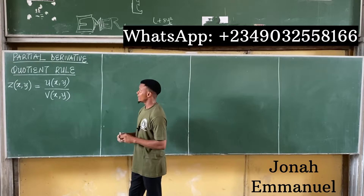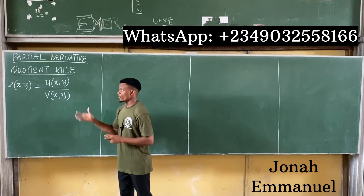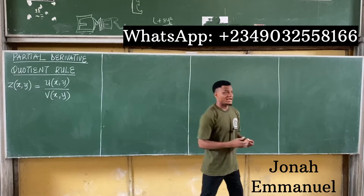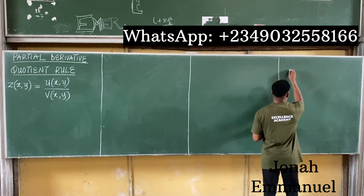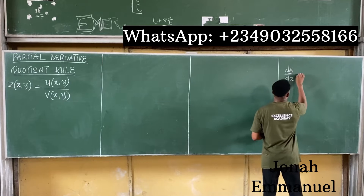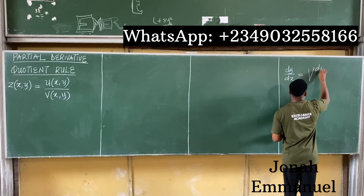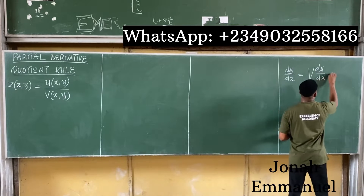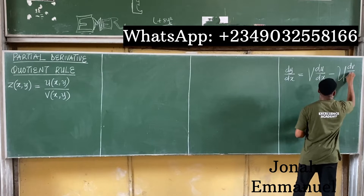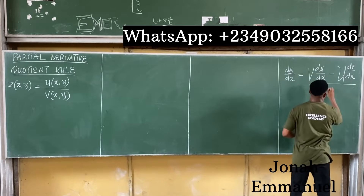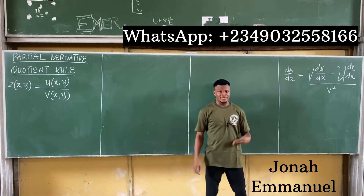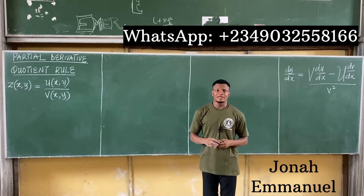Recall from basic calculus that for the quotient rule, dy/dx is equal to v times du/dx minus u times dv/dx, all over v squared. This is what we have from basic calculus, and this same idea will be used here for partial derivatives.